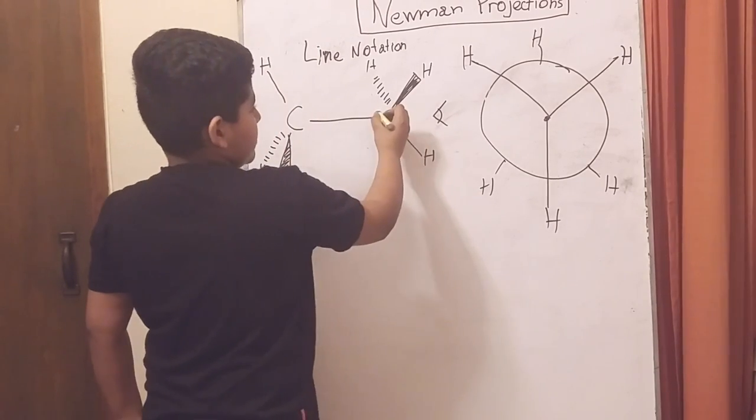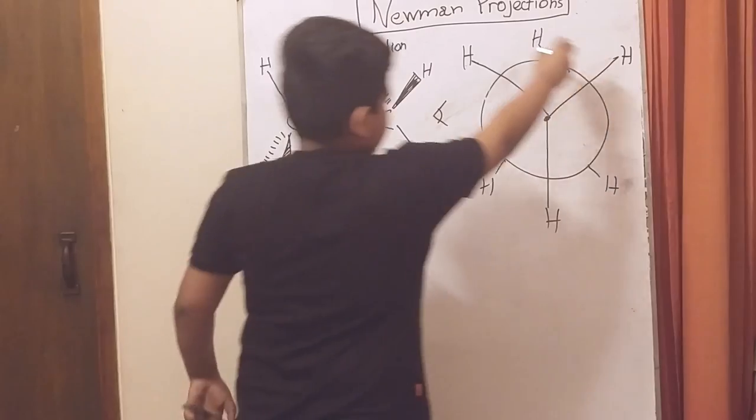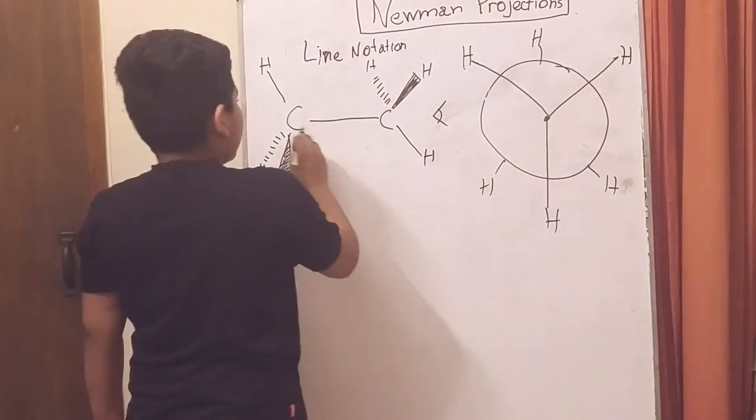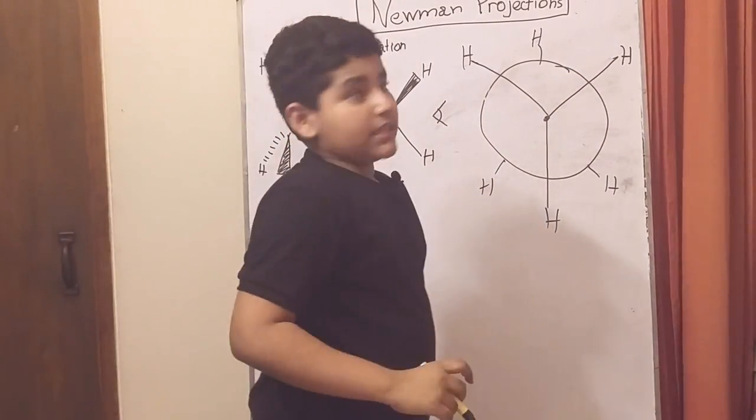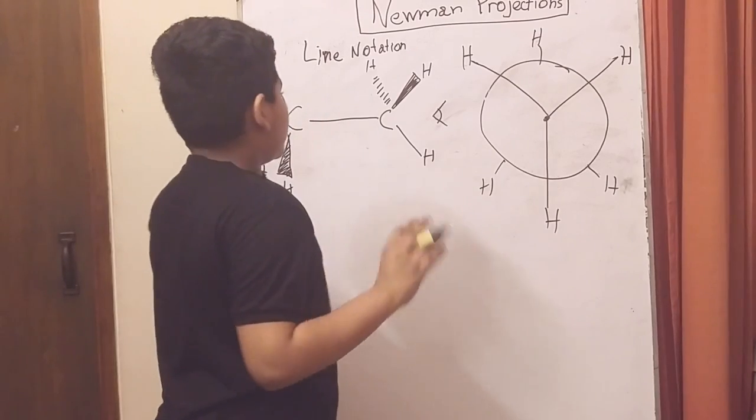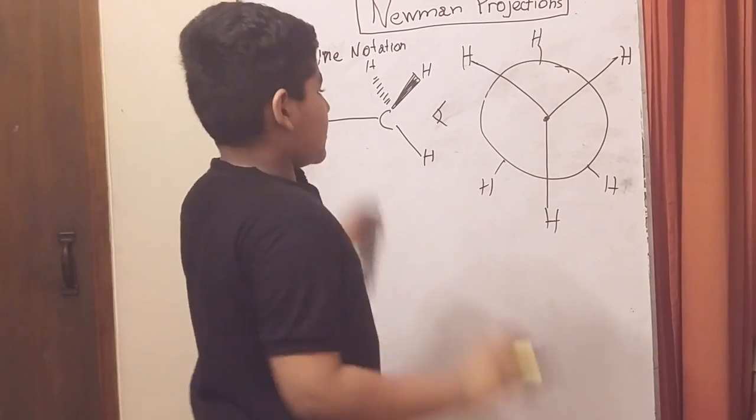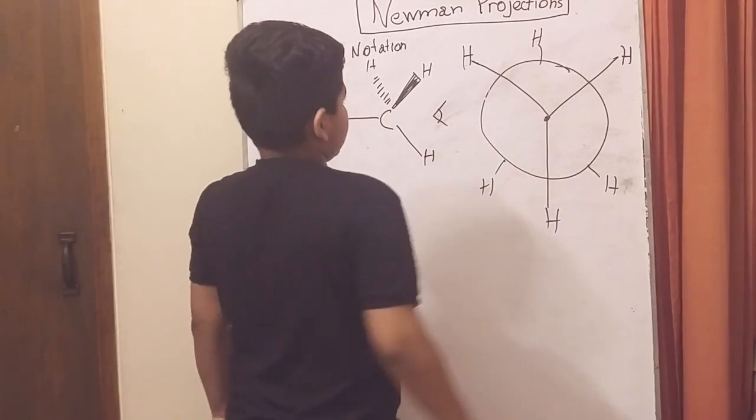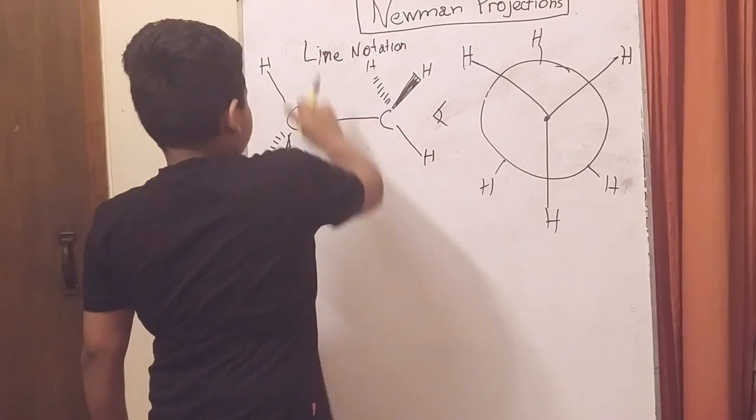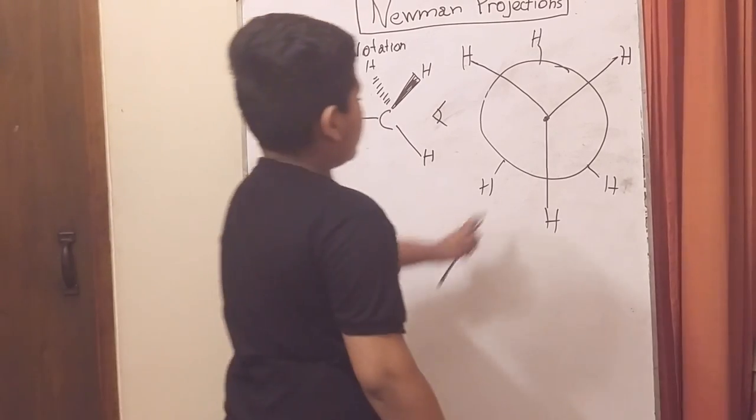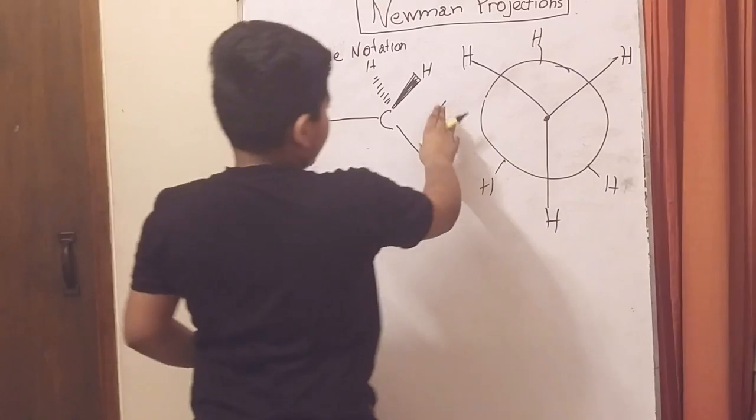This is going to be the front carbon, that's this huge circle. The back carbon cannot be seen, but the six groups projecting from the carbons can be seen. So these bonds can also be visible to us according to this perspective.